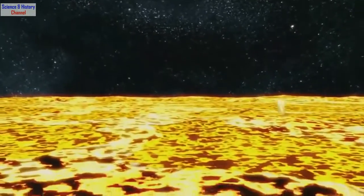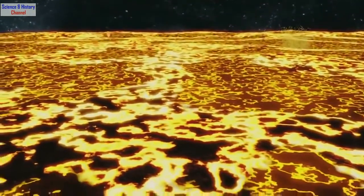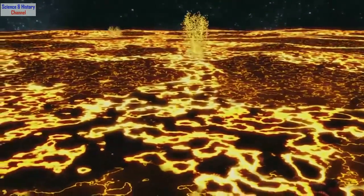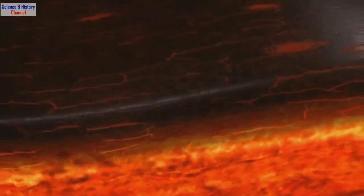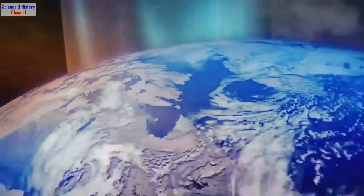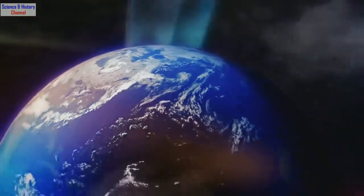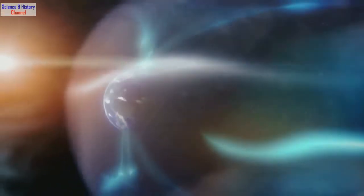Something has to bring order out of this chaos, and once again, that something is gravity. Lighter material drifts toward the surface and forms a solid crust, while heavier material sinks toward the center, forming a molten iron-nickel core. This churning liquid metal creates a magnetic field that reaches out into space. Like a force field, it will protect our future home from the sun's deadly charged particles.